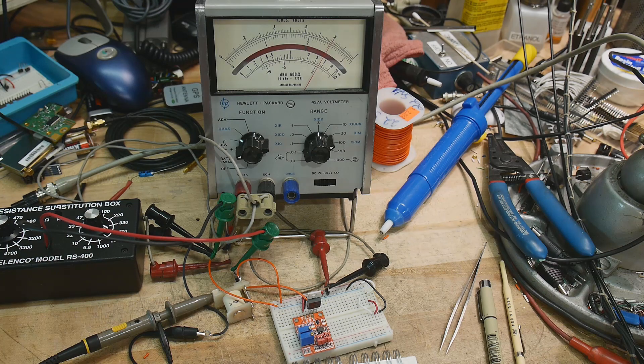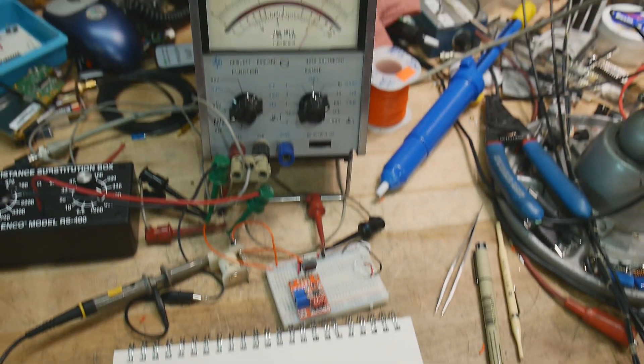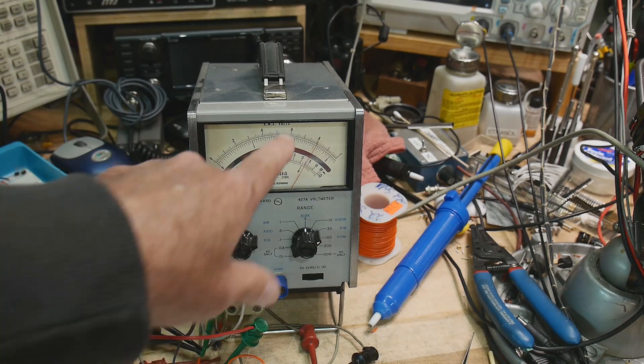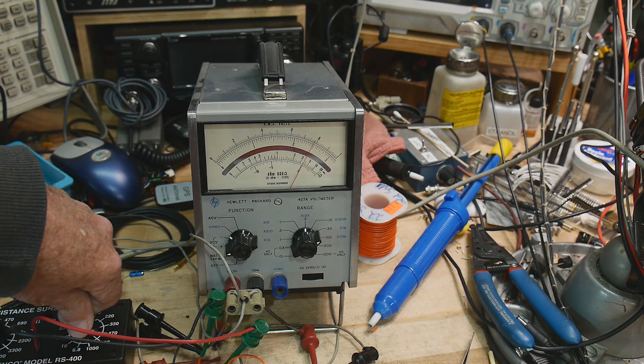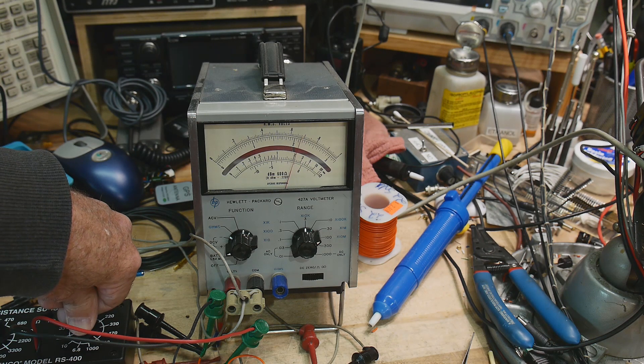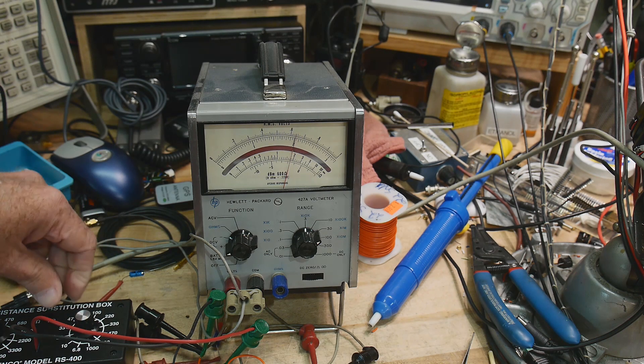And let's change the load. Let's see how much current we can get out of this thing. Let's say we're shooting for a 2 to 1, we're shooting for 20 volts. So I'm going to increase the load on the output, and you can see that we're coming down. Let's see, oh, that's just about right.